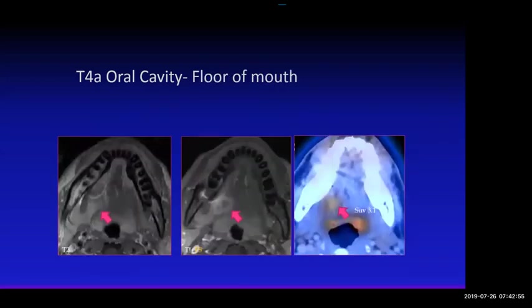Our imaging makes a difference to the care of these patients. This is a moderately locally advanced floor of mouth cancer — the reason it's locally advanced is that it's in the floor of mouth but also extending into the masticator space.